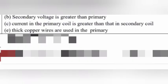The answers are: (b) Secondary voltage is greater than primary voltage. (c) Current in the primary coil is greater than that in the secondary coil. (e) Thick wires are used in primary.